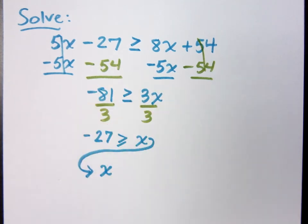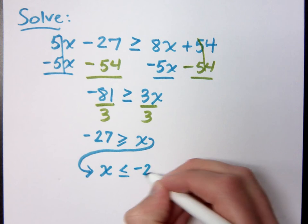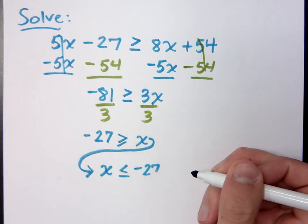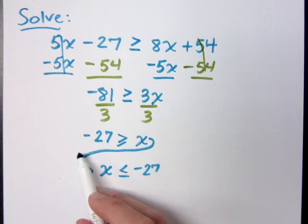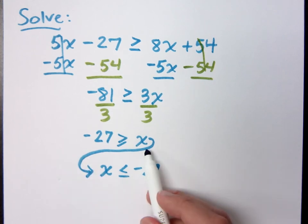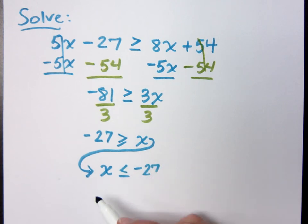The alligator's chomping on negative 27. Which means if I look at it from the other side, the alligator's still eating the negative 27. So negative 27 is greater than x, but backwards means what? Exactly.